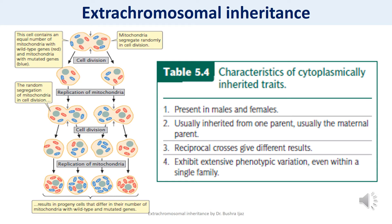Consider mitochondrial genes: most cells contain thousands of mitochondria, and each mitochondrion contains two to ten copies of mitochondrial DNA (mtDNA). Suppose half the mitochondria in a cell contain a normal wild-type copy of mtDNA and the other half contain a mutated copy. During cell division, mitochondria segregate into progeny cells at random, so just by chance one cell may receive mostly mutated mtDNA and another cell may receive mostly wild-type mtDNA.